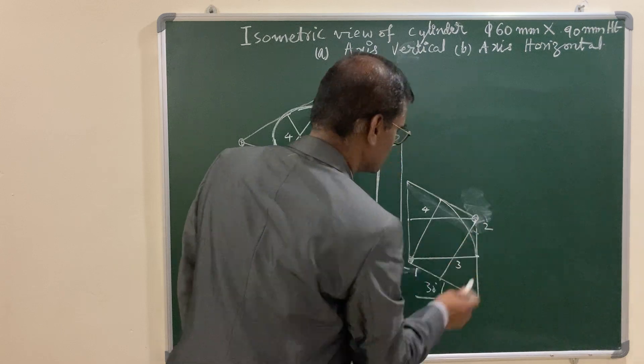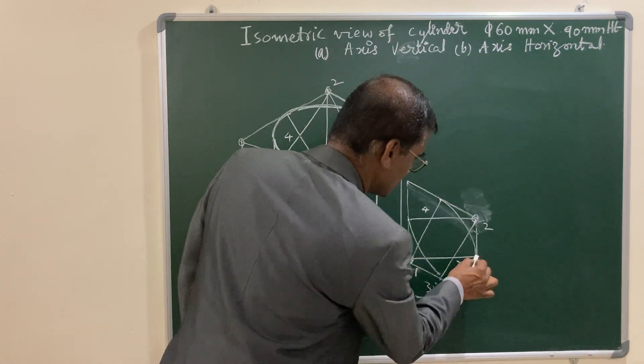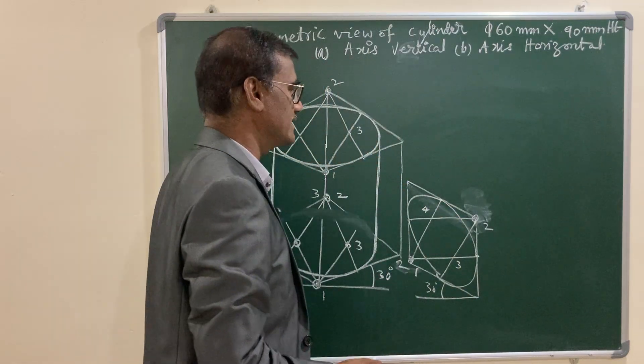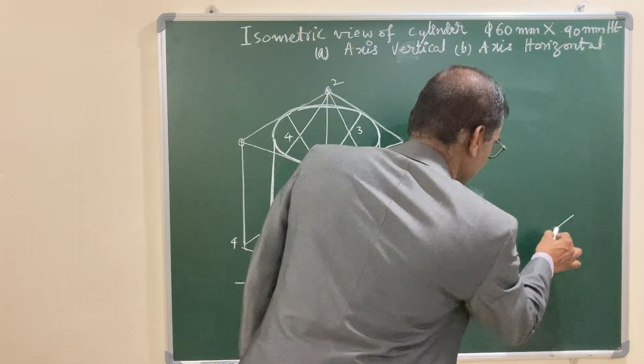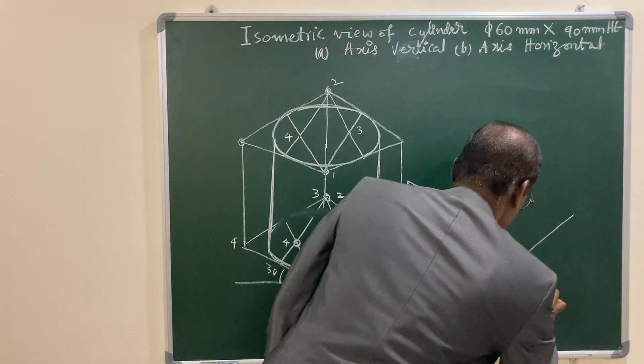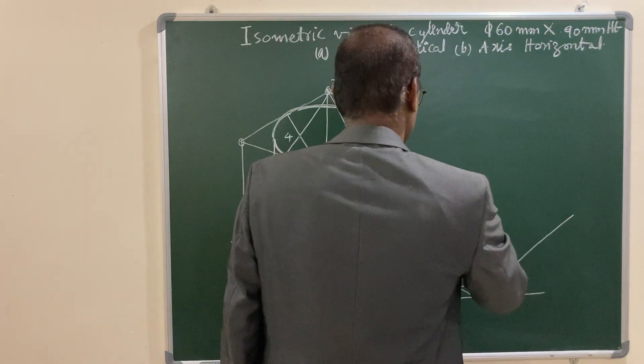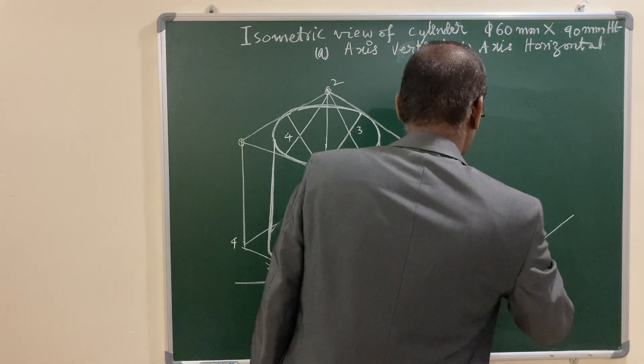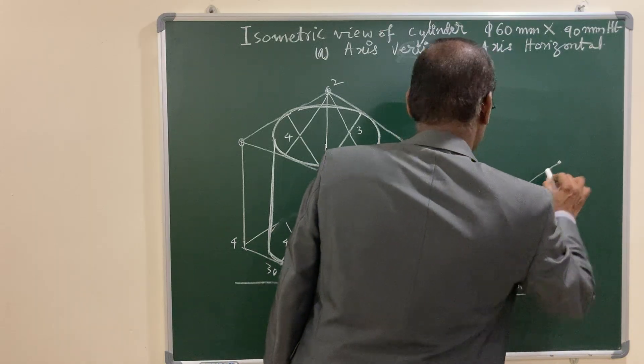1 as center join these 2, the same procedure. 2 as center join these 2, and 3 as center join these 2, 4 as center join these 2. You got the one end. Similarly you erect a line at an angle 30 degrees with the horizontal, and all the corners you just draw the parallelogram parallel to it at a distance 90 mm.